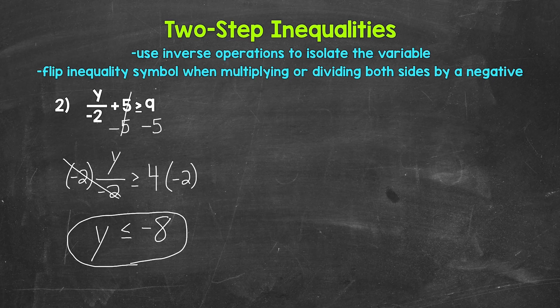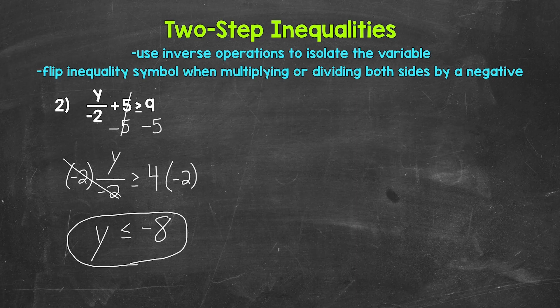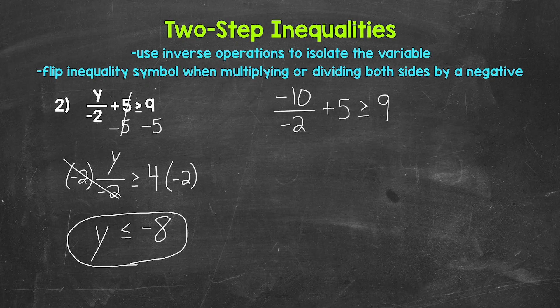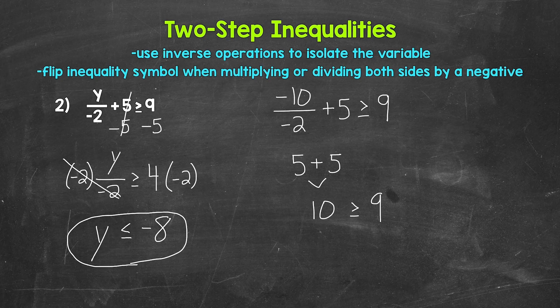So y can be any value less than or equal to negative 8. Let's check by plugging in negative 10. Negative 10 divided by negative 2 plus 5 is greater than or equal to 9. Negative 10 divided by negative 2 gives us 5, and 5 plus 5 gives us 10. 10 is greater than or equal to 9, so that works. Since y can equal negative 8, let's also check: negative 8 divided by negative 2 gives us 4, plus 5 gives 9, and 9 is greater than or equal to 9. Correct. y is less than or equal to negative 8.